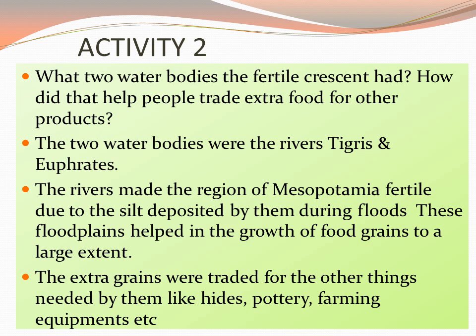This region with continuous floods every year, especially during monsoons, leads to the formation of floodplains, and that is very good for the growth of crops. Then, when extra grains were there, they obviously needed to be traded — if just kept at one place, they would not yield any benefit and might spoil over time. So they started trading, exchanging their extra grains for hides or pottery.